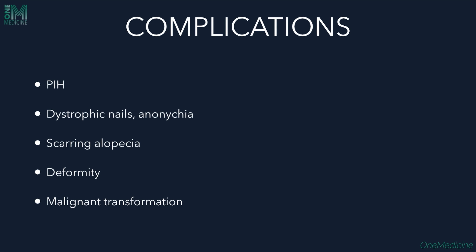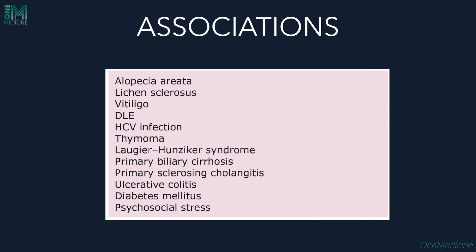Complications of LP include post-inflammatory hyperpigmentation — lesions heal with hyperpigmentation. In nail LP, there can be dystrophic nails and loss of nails (anonychia). Lichen planopilaris on the scalp can cause scarring (cicatricial) alopecia. Long-standing LP on the feet can cause deformities. Malignant transformation has also been seen in long-standing cases. Associated conditions include alopecia areata, lichen sclerosis, vitiligo, DLE, HCV infection, thymoma, ulcerative colitis, diabetes mellitus, and psychosocial stress.